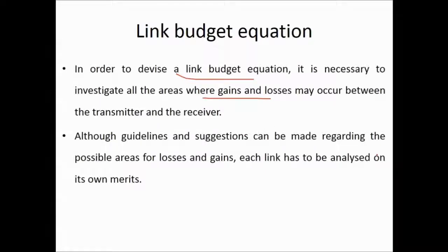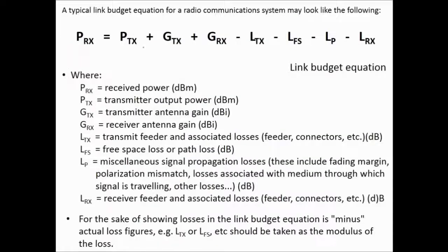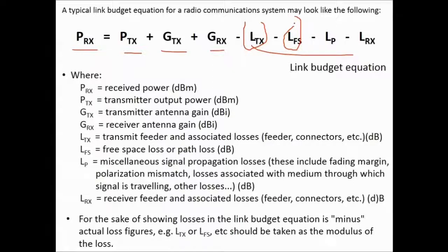Although guidelines can be made regarding possible areas for losses and gains, each link has to be analyzed on its own merits. A typical link budget equation for a radio communication system includes: received power (PRX), transmitted output power (PTX), transmitter antenna gain, receiver antenna gain, minus transmitter feeder and associated losses, free space path loss, miscellaneous losses such as fading margin and polarization mismatch, and receiver feeder losses (LRX). Loss figures are taken as their absolute values in the equation.